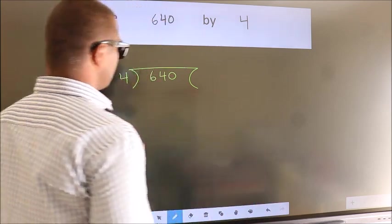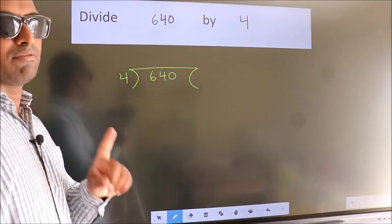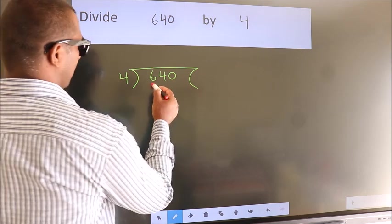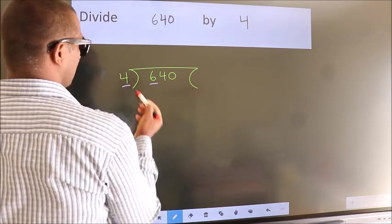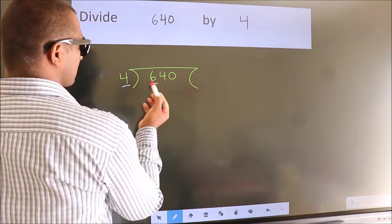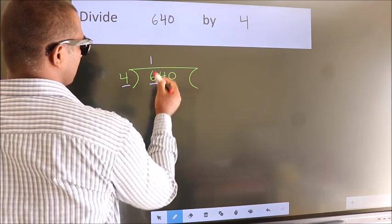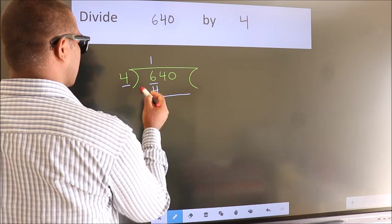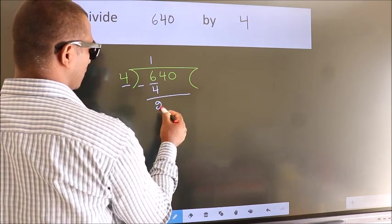This is your step 1. Next, here we have 6, here 4. A number close to 6 in the 4 table is 4 times 1 is 4. Now we should subtract, we get 2.